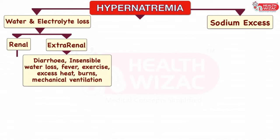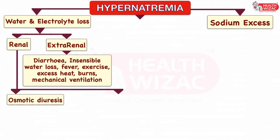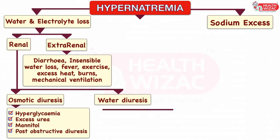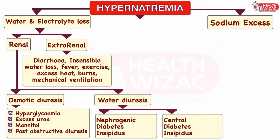The renal cause of water loss can either be due to osmotic diuresis or water diuresis. Osmotic diuresis occurs in conditions of hyperglycemia, excess urea, patients on mannitol treatment, and in patients with post-obstructive diuresis.